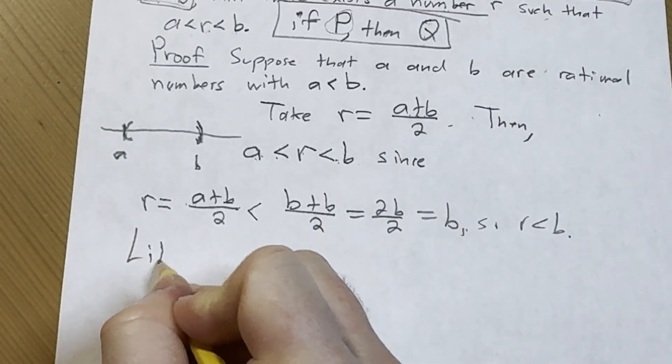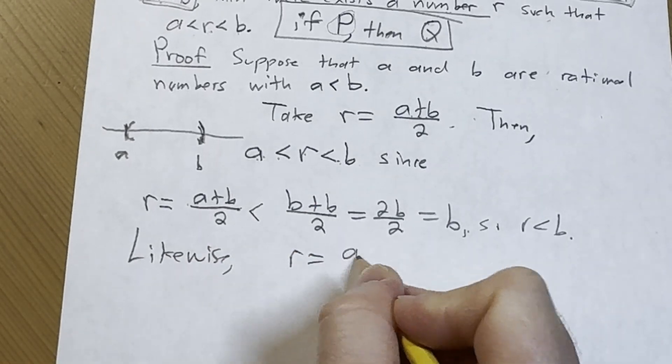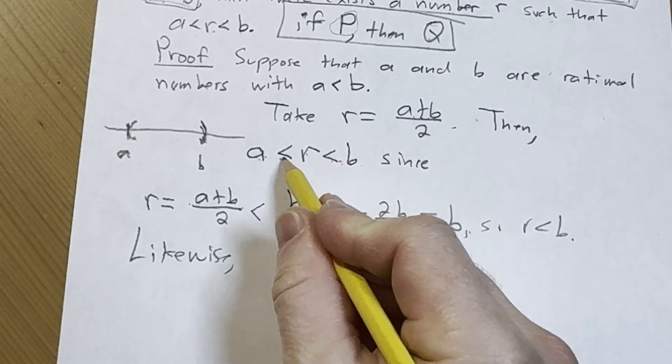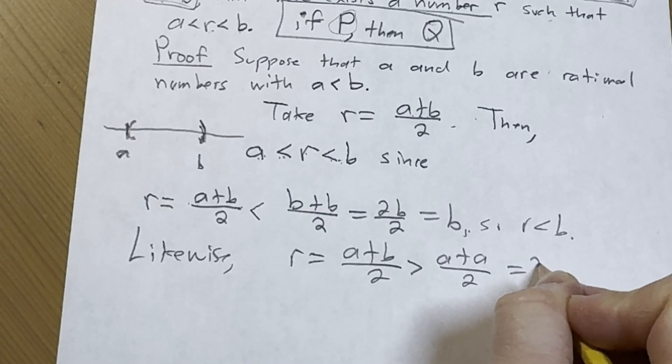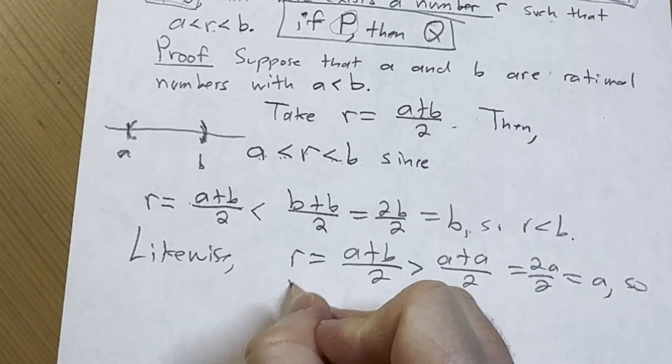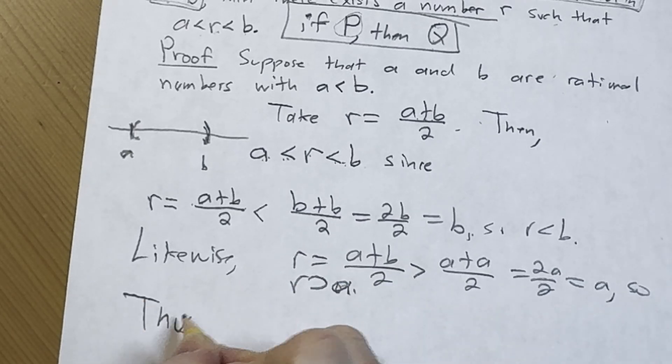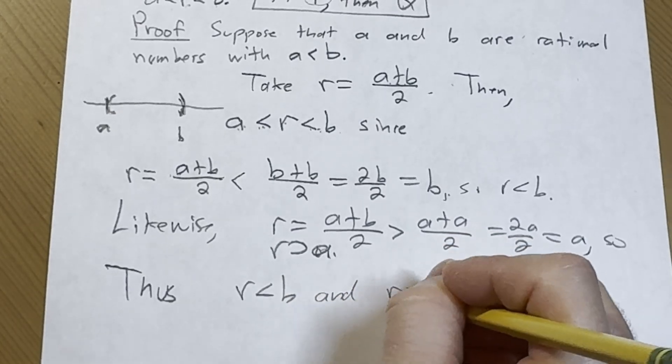Likewise, r equals (a+b)/2. We have to show it's greater than a. Well b is bigger than a, so this is going to be greater than (a+a)/2, equals 2a/2, equals a. So r is greater than a.